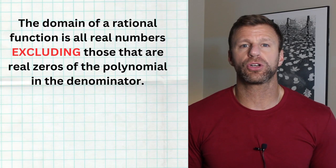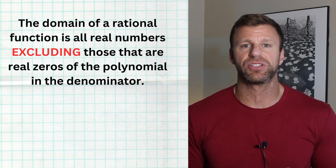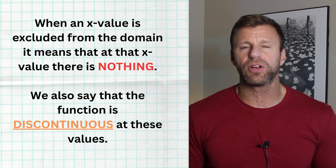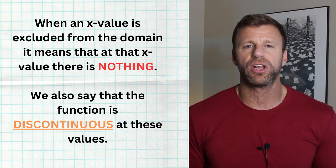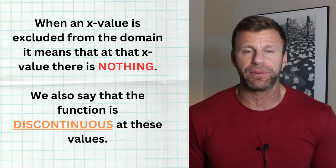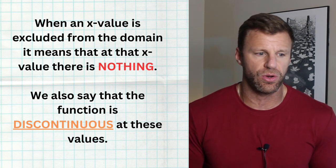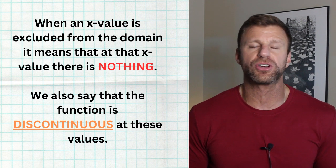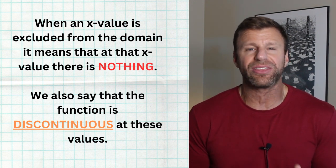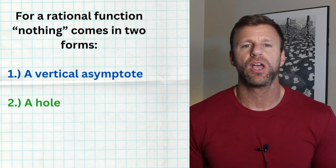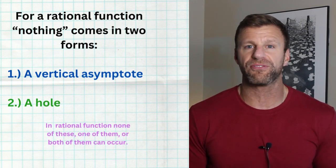Let's dive right into it. To really understand vertical asymptotes and holes we first have to understand the domain of a rational function. The domain of a rational function includes all real numbers excluding those that make the denominator zero. If a value makes the denominator zero it needs to be excluded from the domain. When an x value is excluded from the domain of a rational function, at that particular x value nothing happens — absolutely nothing. In math, the word nothing basically means a discontinuity. So we say that at these particular values the function is discontinuous. There are two forms of discontinuities when it comes to rational functions: a vertical asymptote or a hole.